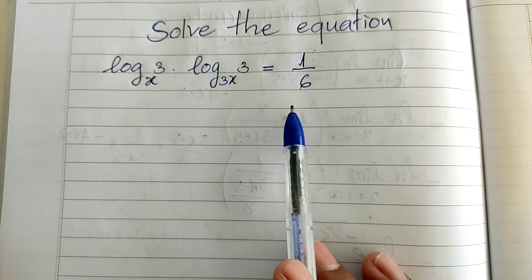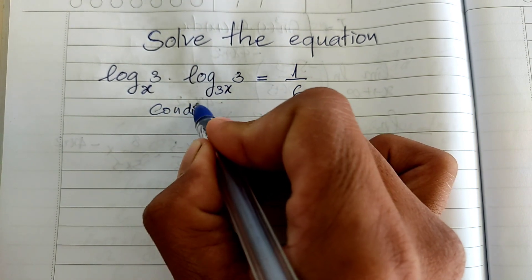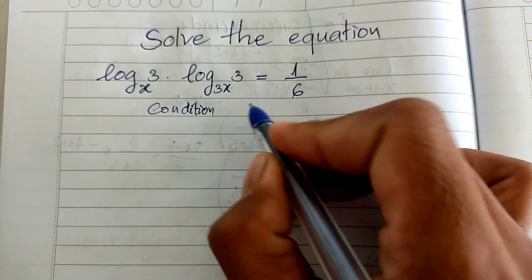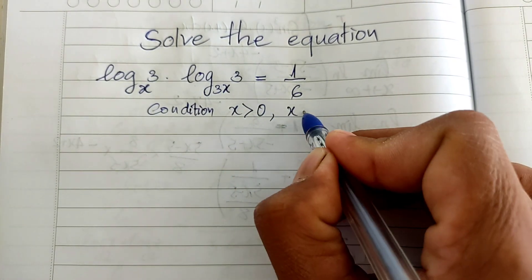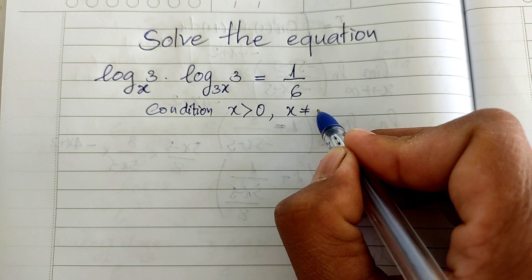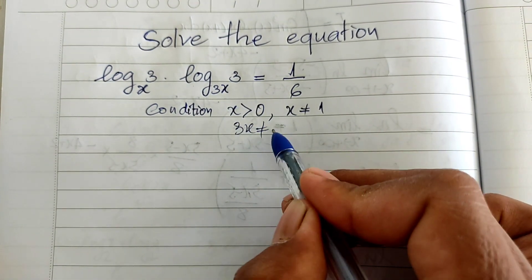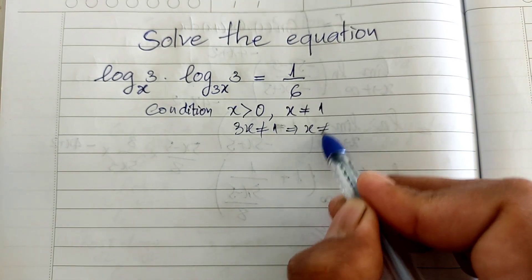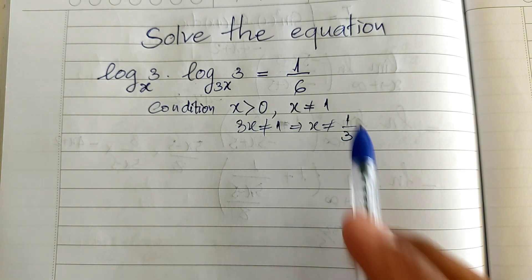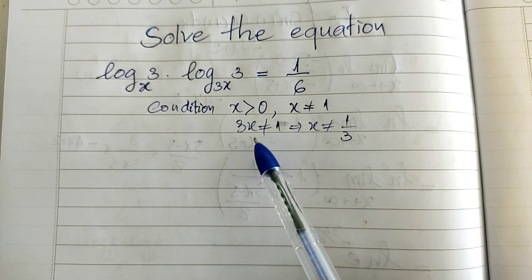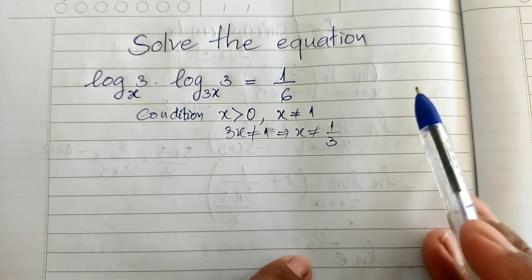Before I solve this equation, we must state the conditions. The condition is h must be positive, and h is not equal to 1. Also, 3h must not equal 1, which gives us h is not equal to 1 divided by 3. That is the condition for our equation.